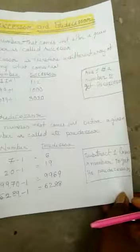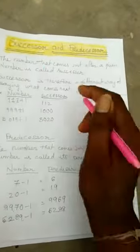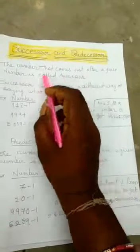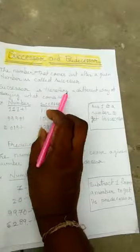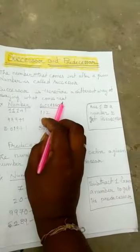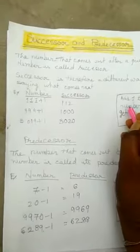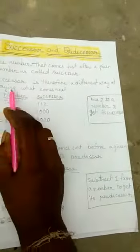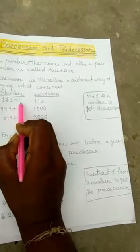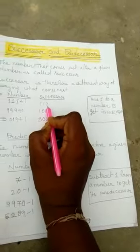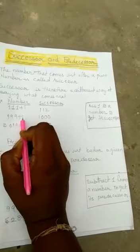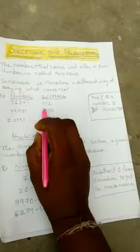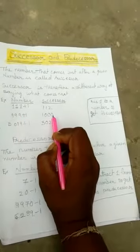Now we learn successor and predecessor. What is the meaning of successor? The number that comes just after a given number is called its successor. To get the successor, we add 1 to the number. For example: 111 plus 1 equals 112. And 999 plus 1 equals 1000.